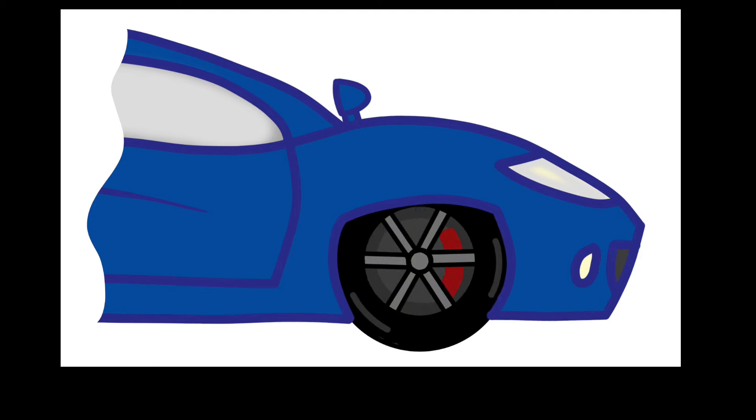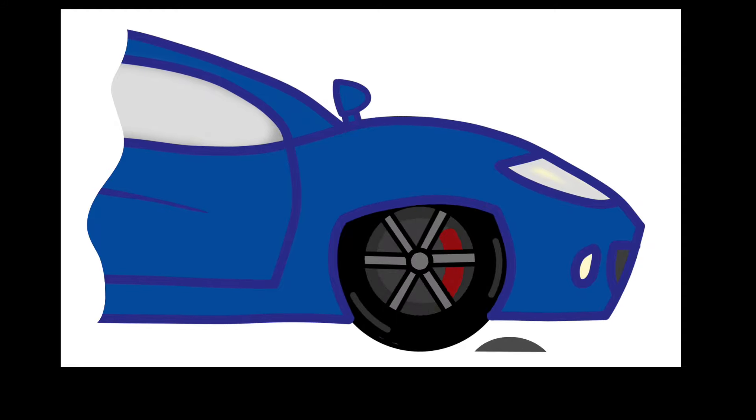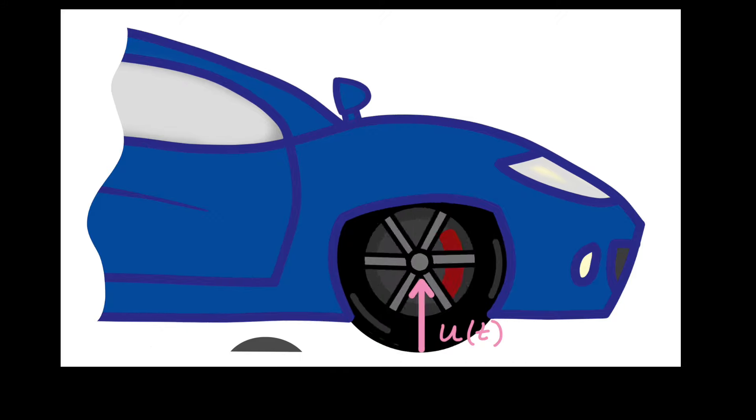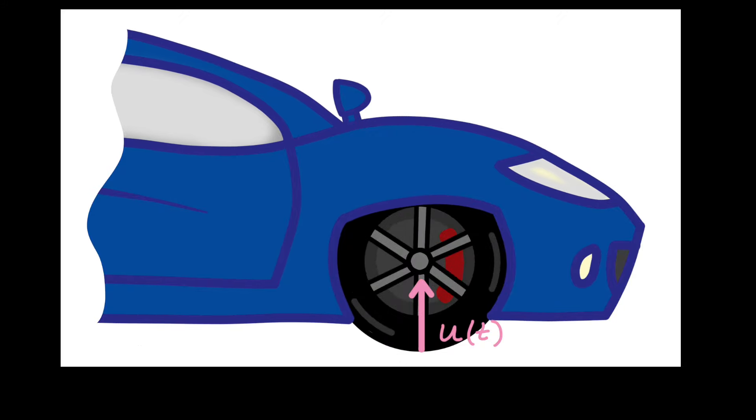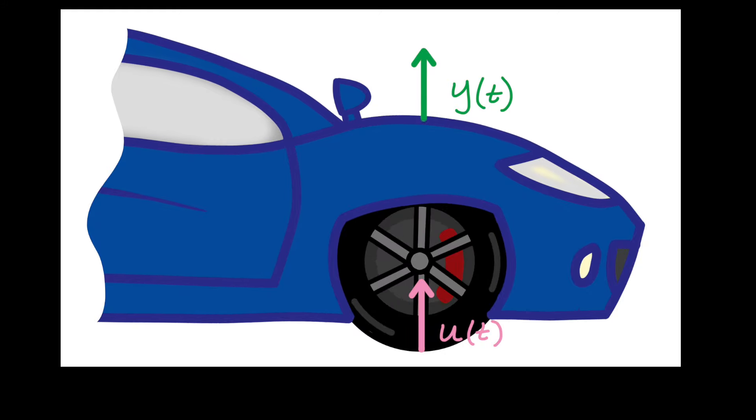As an example, let's look at the suspension system for a car. As the car drives, it encounters bumps in the road, which the suspension will absorb and damp out over time. And these bumps are the inputs, u of t, into the system, and then the vehicle's vertical motion is the output, y of t.